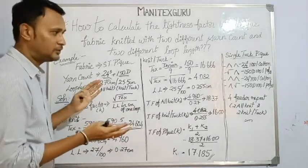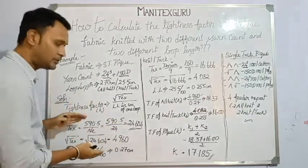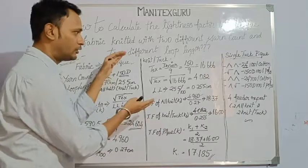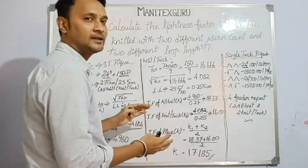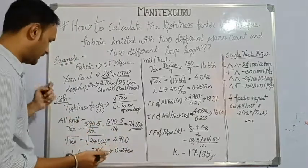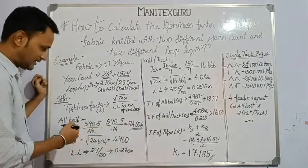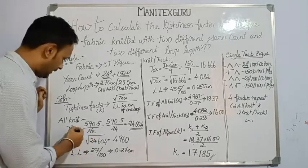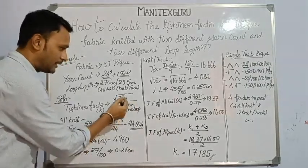Since this fabric is a combination of two different structures — all-knit and knit-tuck — we need to calculate the tightness factor for all-knit first, followed by knit-tuck, so that it is easy to calculate the average tightness factor for the single tuck PQ fabric.